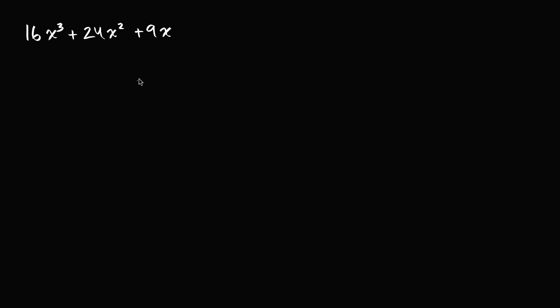Now let's work through it together. So the first thing that you might notice is that all of the terms are divisible by x. So we can actually factor out an x.